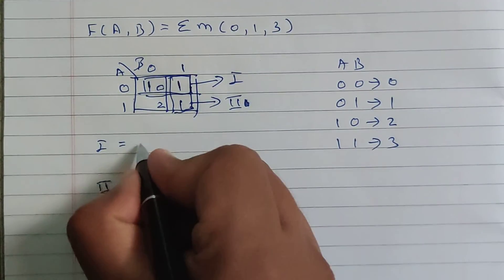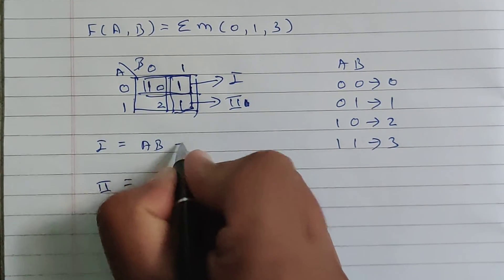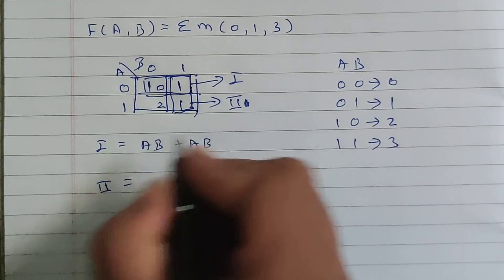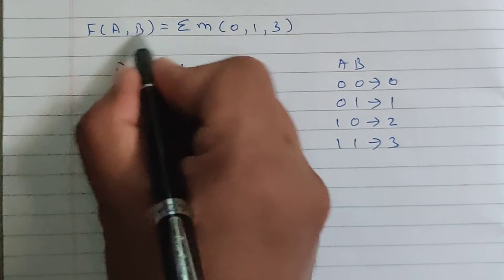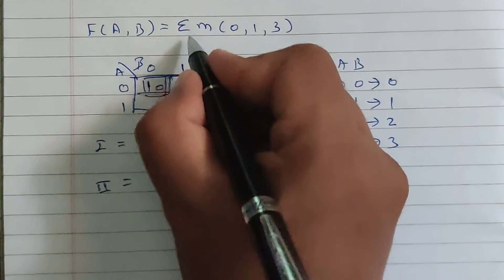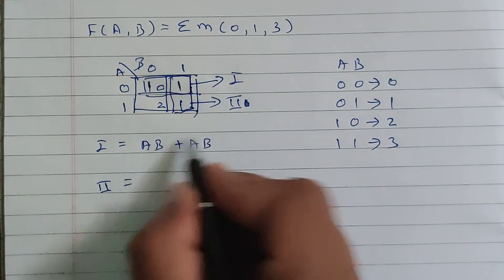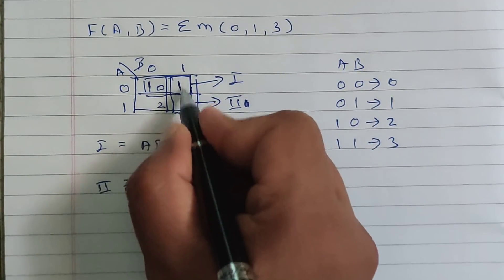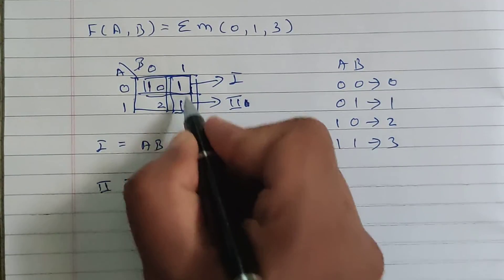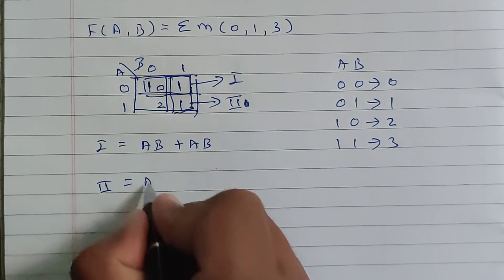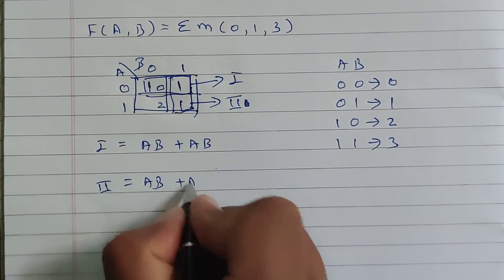2 ones. That's why 2 times we will write AB plus AB. Why we are writing AB? Because it is 2 variable problem. And why plus? Because it is a summation of min terms. So AB plus AB. Similarly, in group number 2, we are having 2 ones. So we will write AB plus AB.